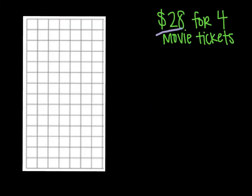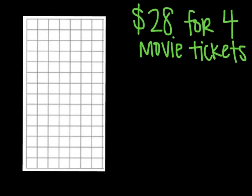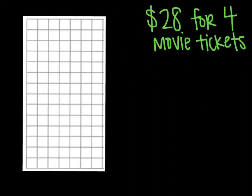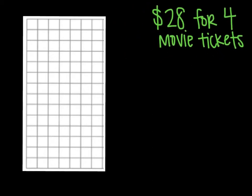Alright, the first problem we have here. I looked up online for the cost of tickets for Rogers Movie Theater, $28 for 4 tickets. So what we're going to have to do is first write our equation. And in order to write our direct variation equation, we have to know what k is, because it's y equals kx.